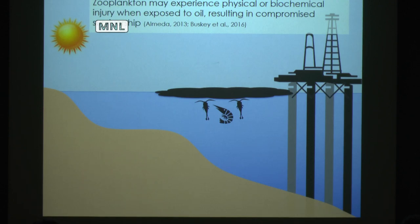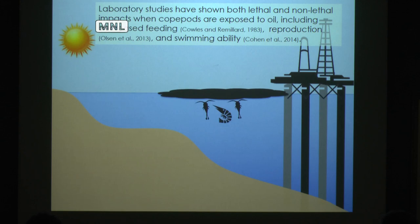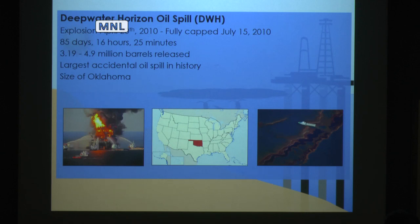In addition to these natural environmental factors, anthropogenic oil spills can also influence zooplankton. Zooplankton can experience physical or biochemical harm when exposed to oil, and some laboratory studies have shown that copepods exposed to oil have decreased feeding ability, reproduction, and swimming ability. This brings us to the Deepwater Horizon oil spill, which occurred in April of 2010. For nearly three months, between 3 and 4.9 million barrels of oil were released into this ecosystem.